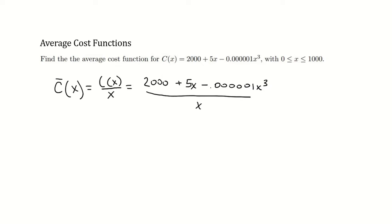So we end up dividing each term by x and we get 2000 over x. For 5x over x, the x cancels and we're left with 5. Minus the small decimal times x to the third over x, which would be x squared, so 0.0000001x squared.